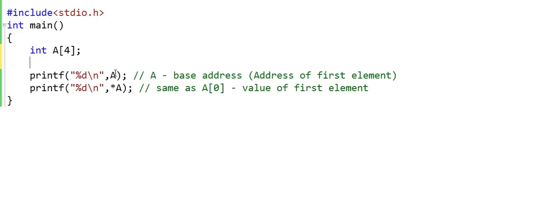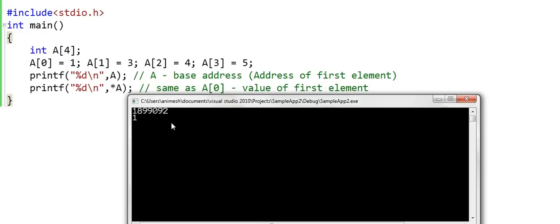So what I'll do here is I'll fill some data. Let's say A0 is 1, A1 is 3, A2 is 4 and A3 is 5. Now if we run this again, the first line once again gives us the address of the first element and the second line gives us the value of the first element, and that's correct.